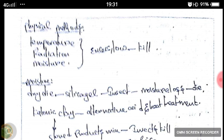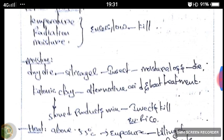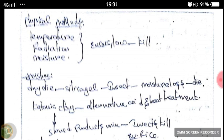In the physical method of pest control, we rely on several physical factors like temperature, radiation, and moisture. By making these factors available in excess or in lower amounts, we can kill insects.